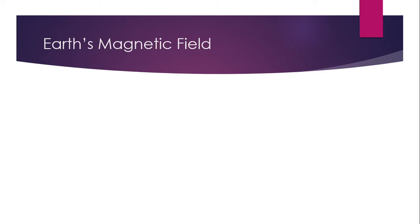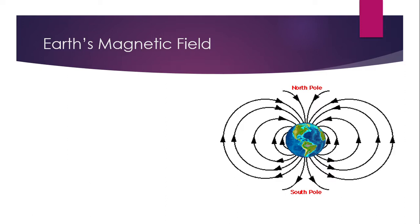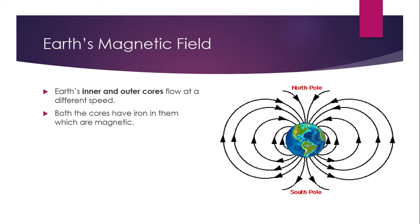Earth's Magnetic Field. Earth's inner and outer core flow at a different speed. Both the cores have iron in them which are magnetic.